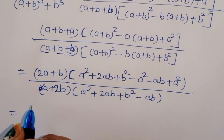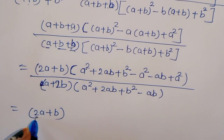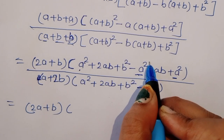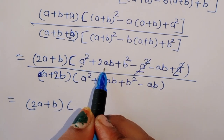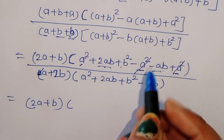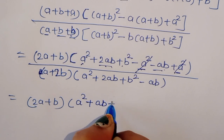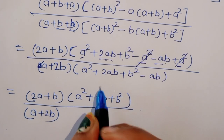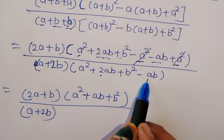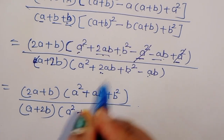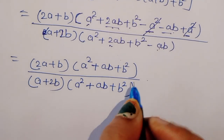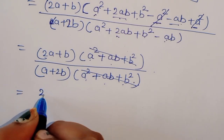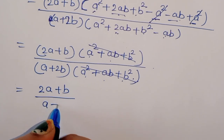In the numerator, expanding gives A² plus 2AB plus B² minus AB, and the A² terms cancel, leaving A² plus AB plus B². In the denominator, similarly A² plus 2AB minus AB plus B² simplifies to A² plus AB plus B². So A² plus AB plus B² cancels from numerator and denominator. The remaining expression is (2A plus B) divided by (A plus 2B).